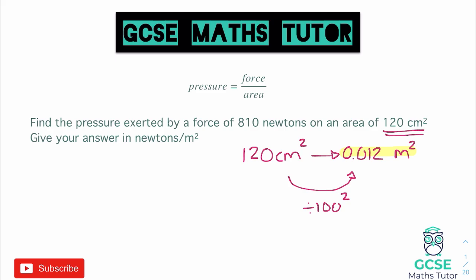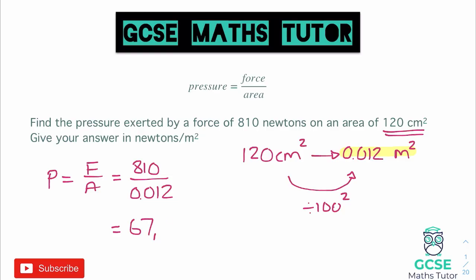From here it's not too difficult — we need to find the pressure, and we know from our formula that pressure equals force divided by area. Our force is 810, and our area, which we now have in metres squared, is 0.012. So we type 810 divided by 0.012 into our calculator, and it gives us 67,500. The units, as already told to us in the question, are newtons per metre squared. Check the dotted line, as the units may already be given, in which case just write 67,500.